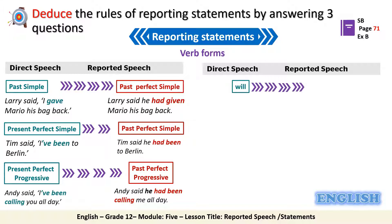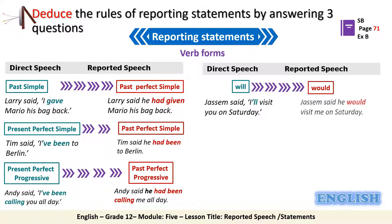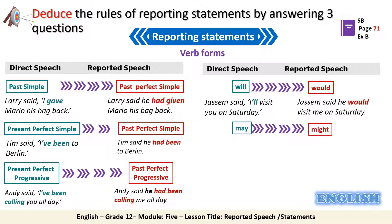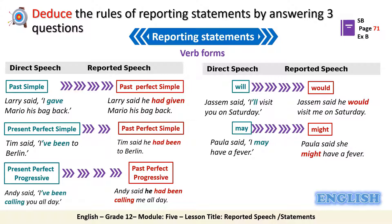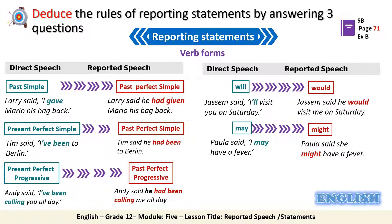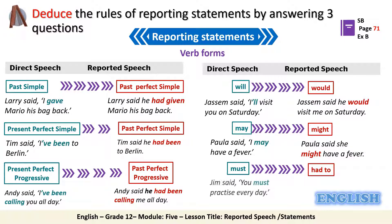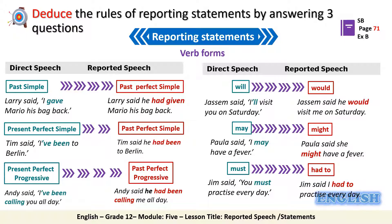For 'will,' it changes to 'would' — for example, 'will visit' becomes 'would visit.' The modal verb 'may' changes to 'might' — for example, 'may have' becomes 'might have.' However, if 'might' is used in the direct speech, it remains the same in the reported speech. Then 'must' in direct speech changes to 'had to' in reported speech — for example, 'must practice' becomes 'had to practice.'